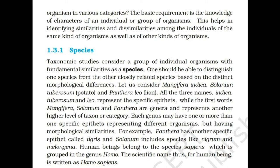Knowledge of characters helps in identifying the similarities and dissimilarities among individuals of the same kind as well as other kinds of organisms. Taxonomic studies consider a group of individual organisms with fundamental similarities as a species. One should be able to distinguish one species from other closely related species based on distinct morphological differences. Consider Mangifera indica, Solanum tuberosum (potato), and Panthera leo (lion).